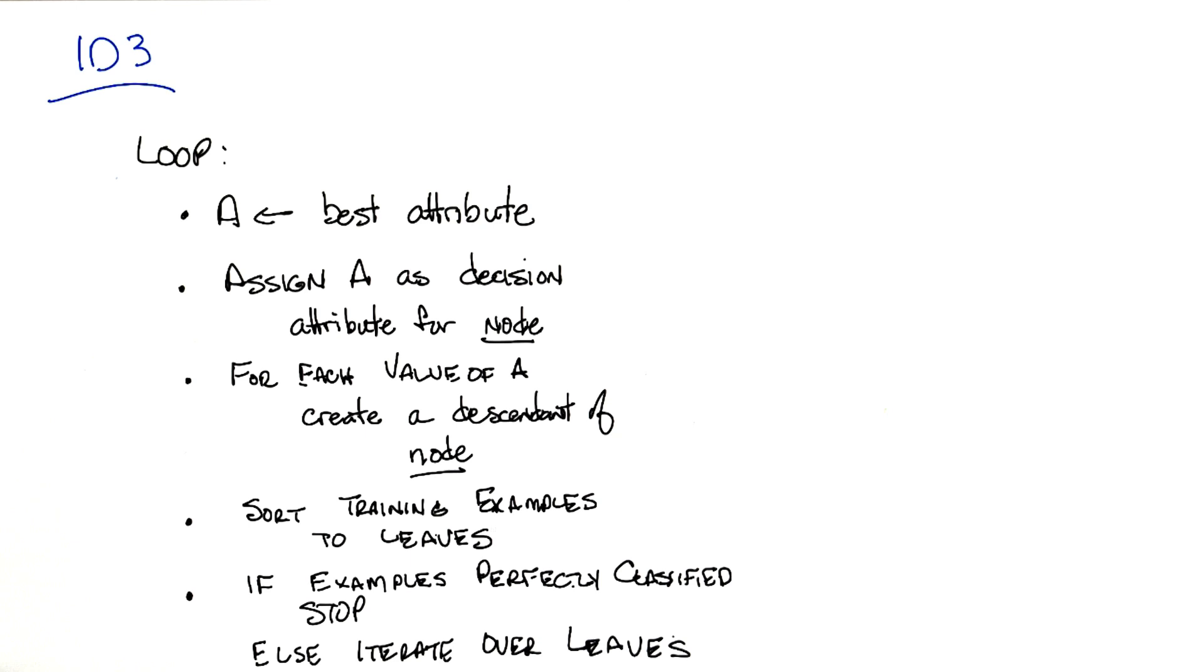Then for each value that the attribute A can take on, create a descendant of node, sort the training examples to those leaves based upon exactly what values they take on. And if you've perfectly classified your training set, then you stop. Otherwise, you iterate over each of those leaves.